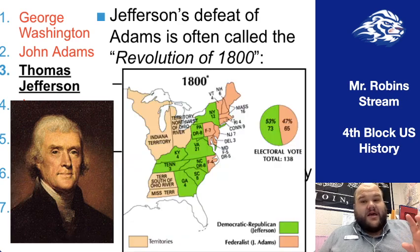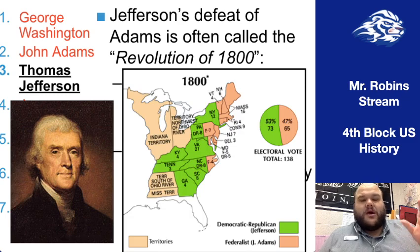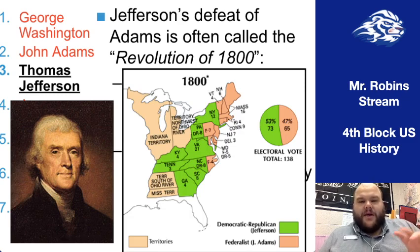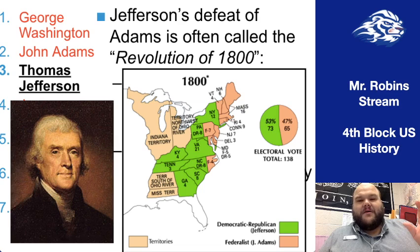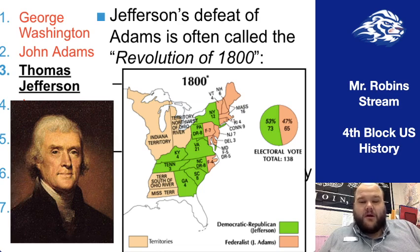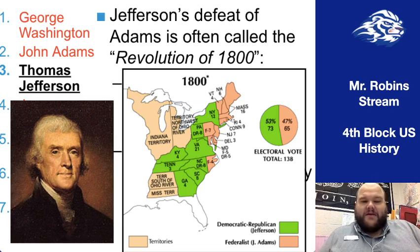It is a close election, though, because Adams still had his supporters. Places like New England had a lot of Federalist support, and more urban areas of places like Pennsylvania and North Carolina also had strong Federalist support. The more rural areas of these states were generally Democratic-Republican and supporters of Jefferson.